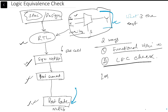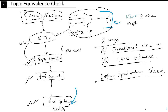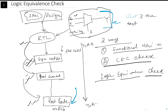The simpler method is LEC — Logic Equivalence Check. From the name itself you can understand: it checks whether two designs are logically equivalent or not. Is the synthesized netlist equivalent to the RTL? Is the post-scan netlist equivalent to the synthesized netlist? The primary intention is that functionality should be maintained throughout the entire process.